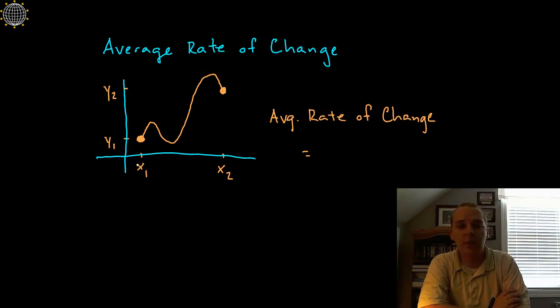But over this given interval here from x₁ to x₂, it does have an average rate of change. Now how do we see that?